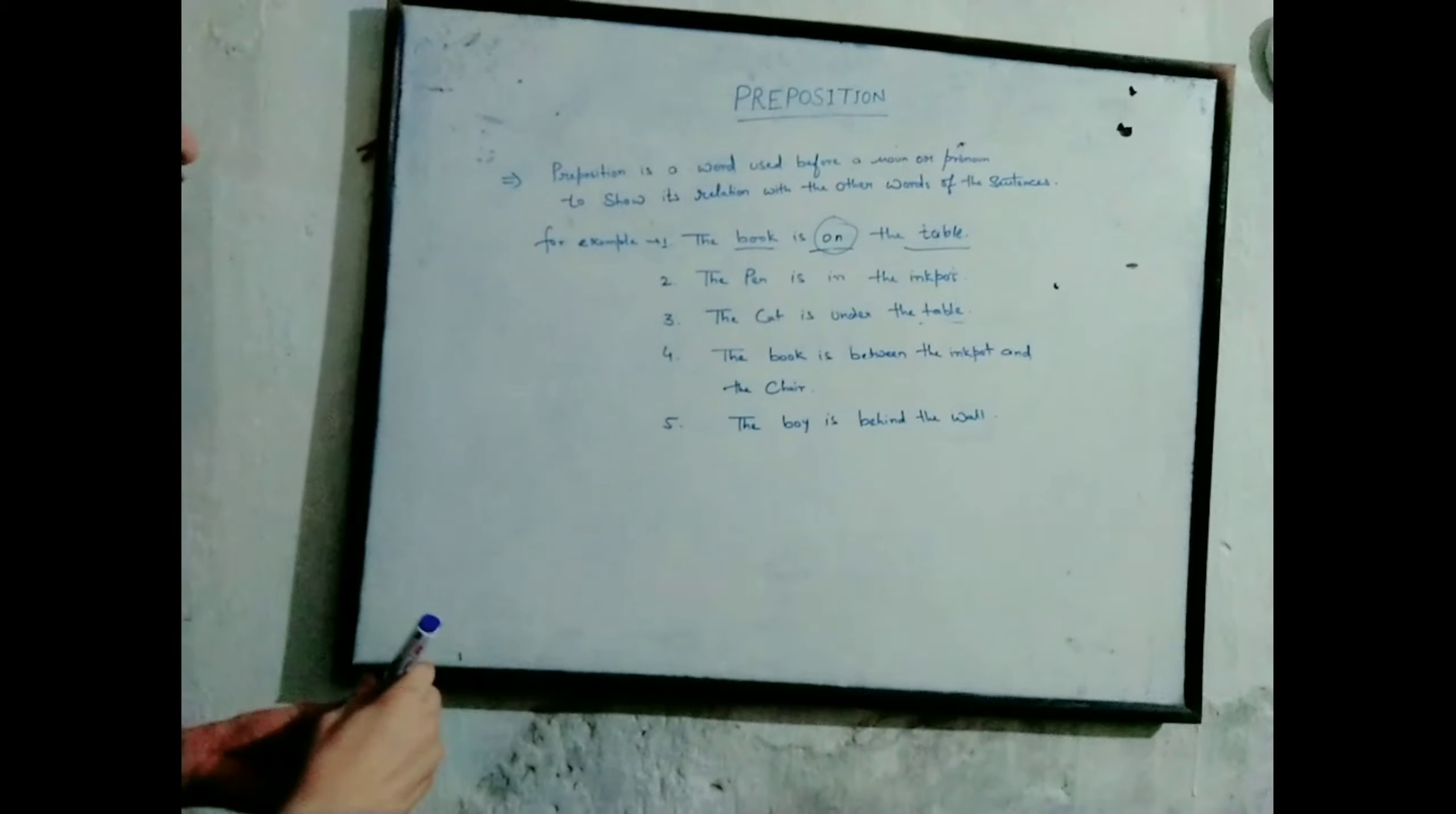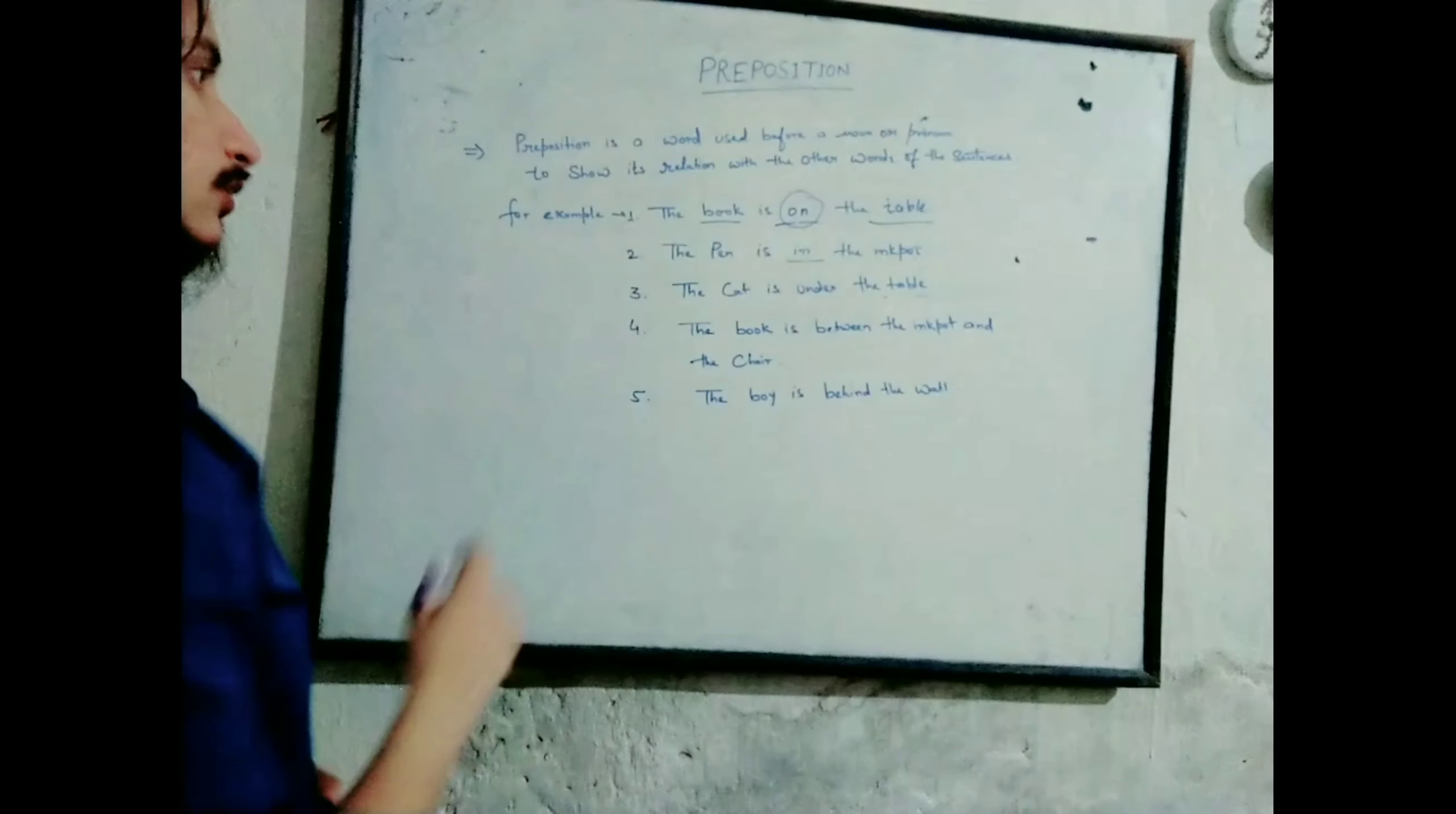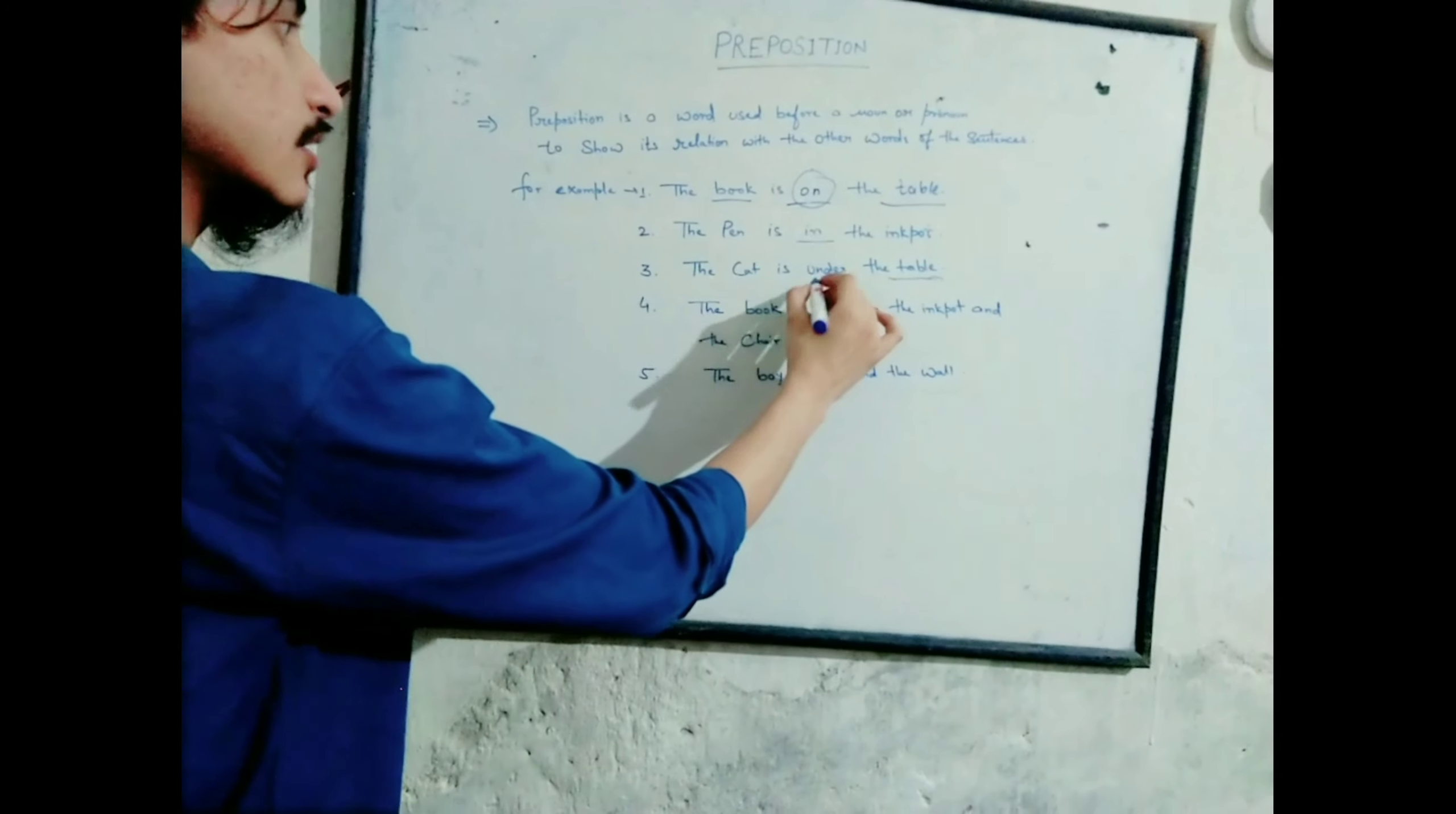The next sentence is: the pen is in the ink pot. In this sentence 'in' is a preposition. The third one is: the cat is under the table. As I already told you, preposition is a word used before a noun or pronoun. Here, table is a noun and before the noun there is the word 'under', so 'under' is a preposition.